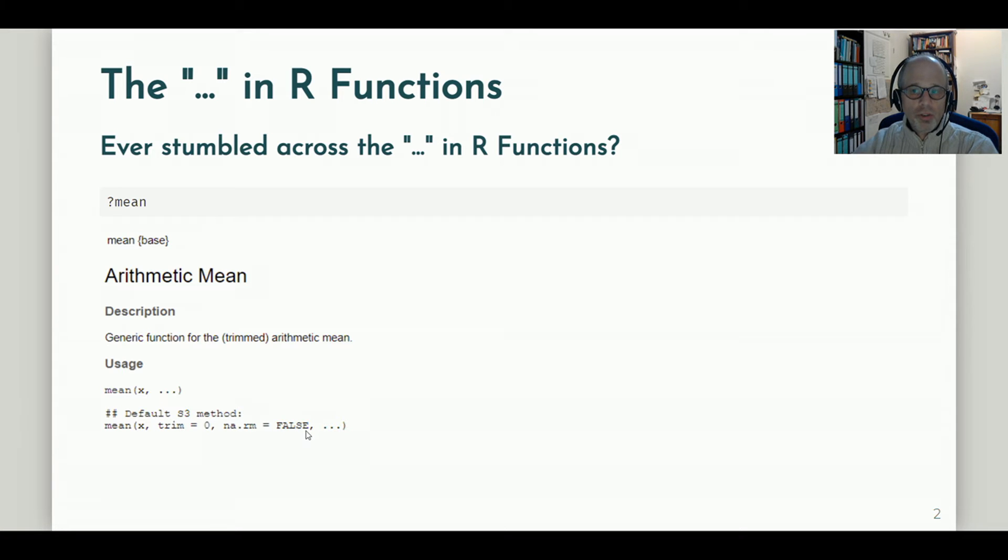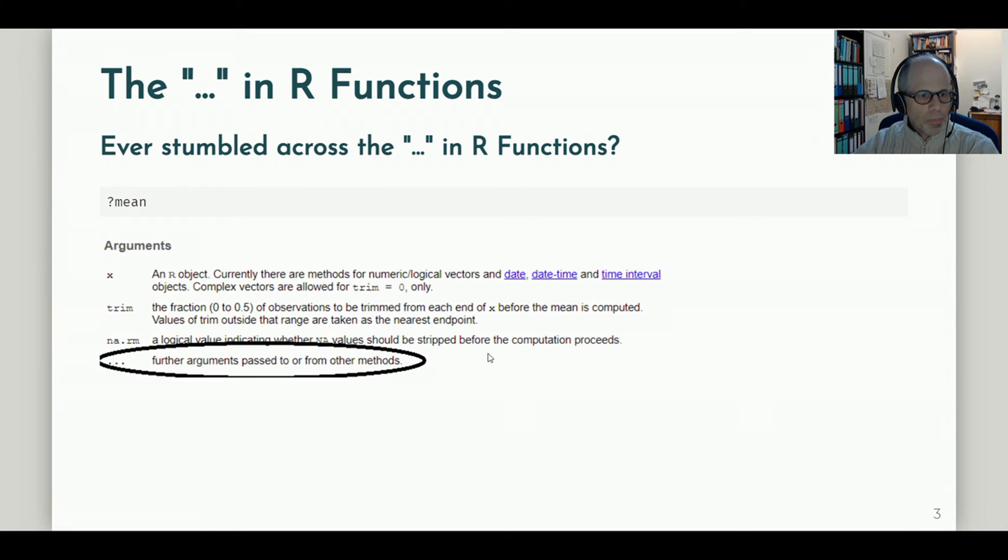So the generic function checks which object it has passed and then moves on to the dedicated mean function depending on the object type. And here the three dots really make sense. Let's look a bit more at the documentation. We see where the arguments are described for the dot dot dot. The description says further arguments passed to or from other methods.